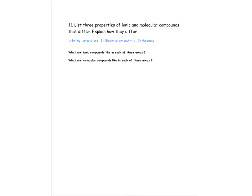I hope my voice will come through okay here with the cold, but let's go for it. So let's read the first question. It says: list the three properties of ionic and molecular compounds that differ and explain how they differ. The first difference is the boiling temperature, second is electrical conductivity, and the third is hardness.